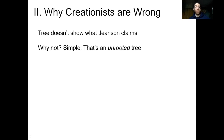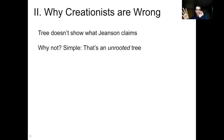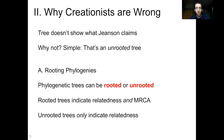So let's talk about why Jeanssen is wrong about this. The simple reason is that tree doesn't show what Jeanssen claims. Jeanssen claims it shows three distinct lineages. That's not true, because it's an unrooted tree. So to get at this, we have to talk a little bit about phylogenies and phylogenetics and how to read these types of figures.